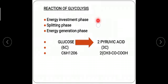Reactions of glycolysis. The pathway can be divided into three distinct phases. First is the energy investment phase, in which energy as ATP is put in.